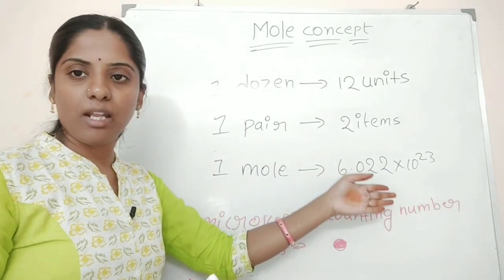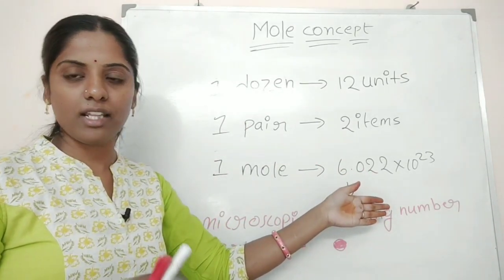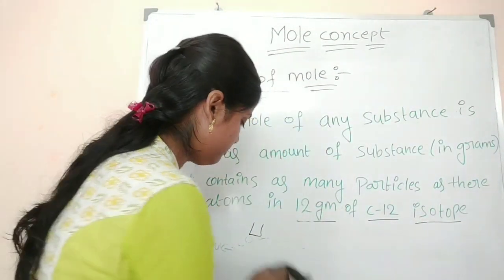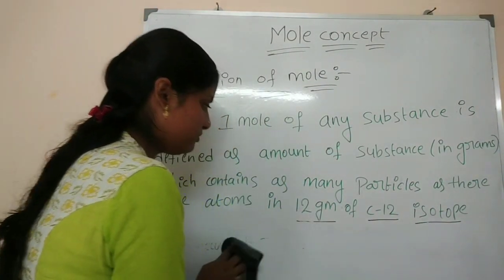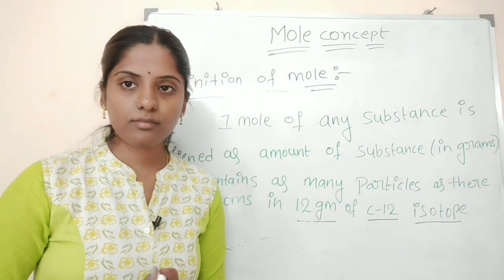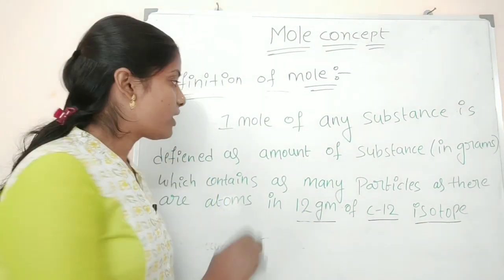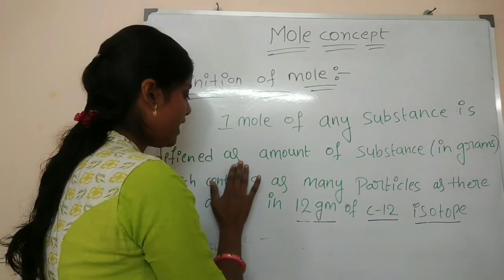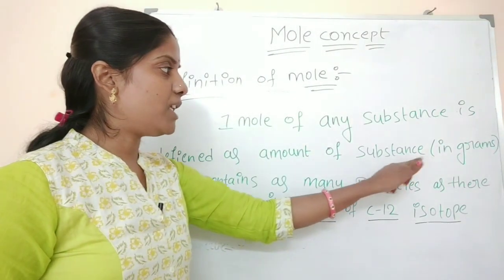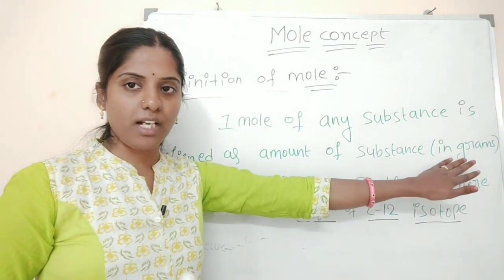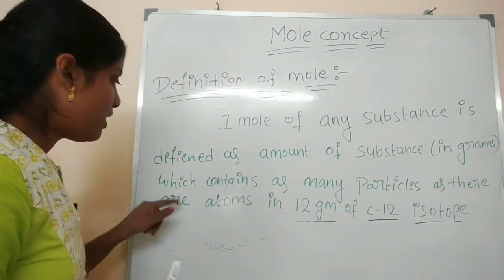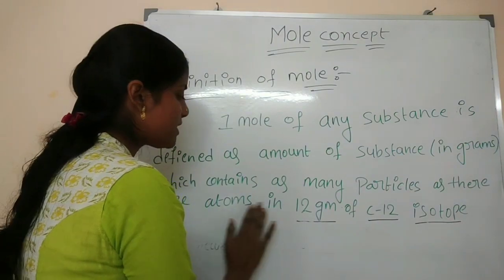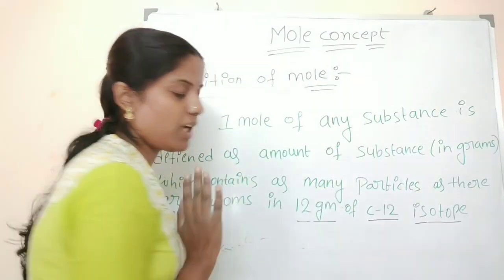Mole definition: one mole of any substance is defined as the amount of substance in grams which contains as many particles as there are atoms in 12 grams of carbon-12 isotope.